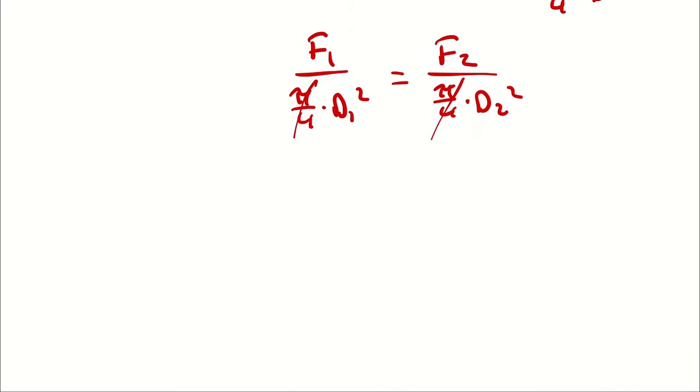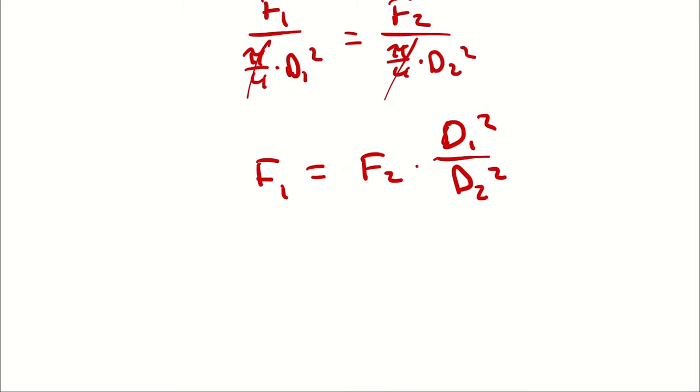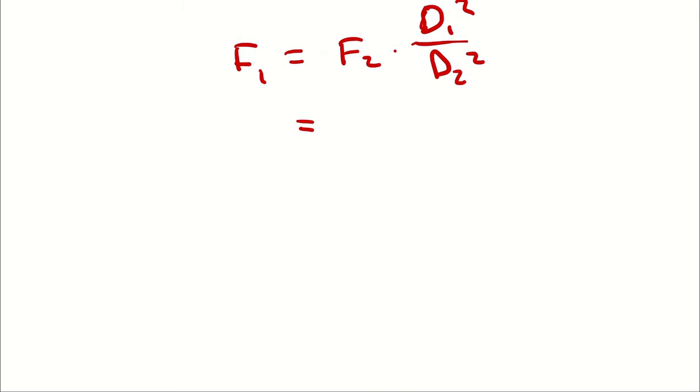Pi over 4 is going to cancel. So, I can write F1 is equal to F2 times diameter 1 squared over diameter 2 squared. And then, I'm going to simplify that square by writing this as F2 times diameter 1 over diameter 2 quantity squared.